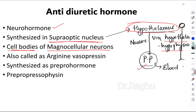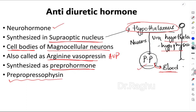Once in the posterior pituitary, it is released whenever required, enters the blood, acts on receptors, and leads to its actions. This hormone is also called AVP, which stands for arginine vasopressin. It is synthesized as a pre-prohormone, and the name of that pre-prohormone is pre-propresophysin.